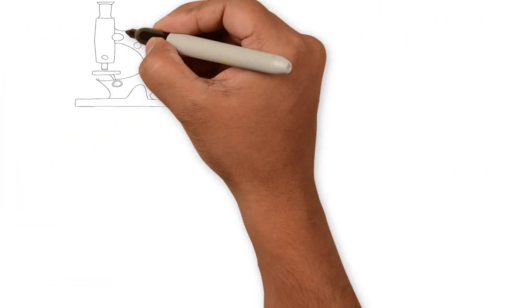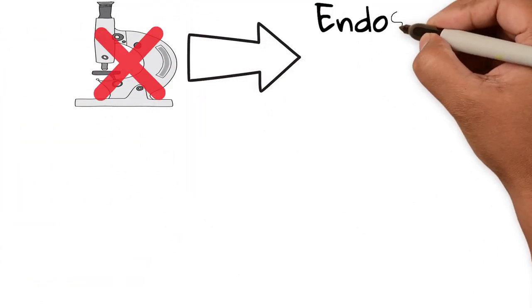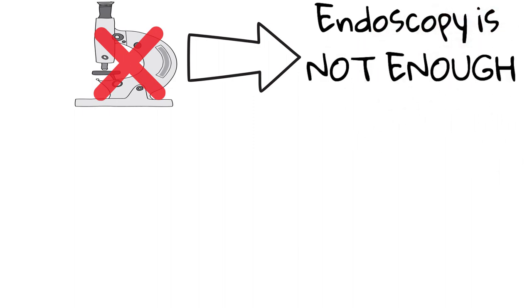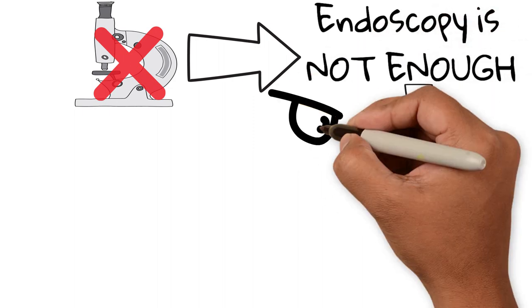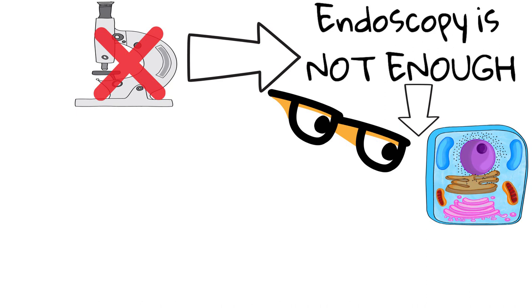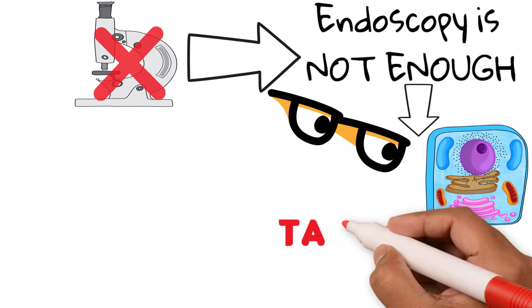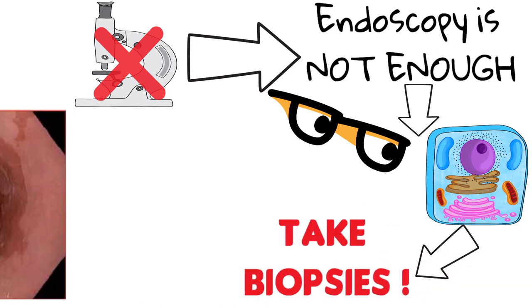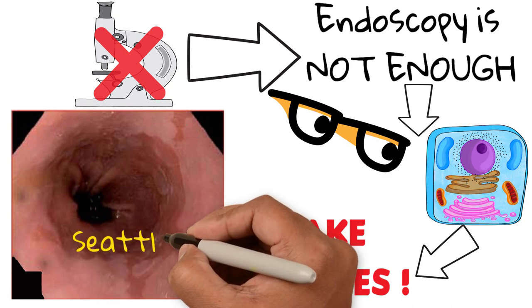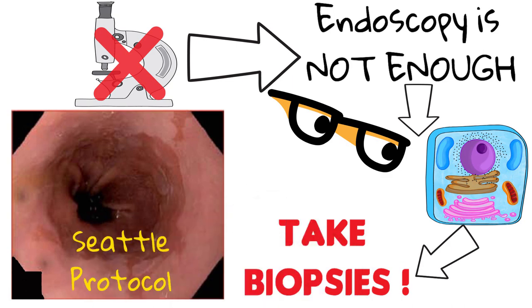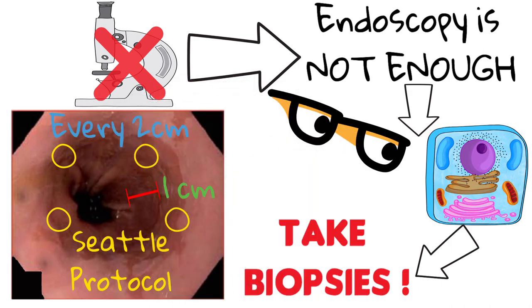An important thing to remember is that endoscopies don't have a microscopic vision, meaning that endoscopy alone is not enough to diagnose Barrett's esophagus — we need to look at the cells. Therefore, the final step in endoscopy is to take biopsies of the diseased esophagus following the Seattle Biopsy Protocol, which includes taking random biopsies from four different quadrants every 2 centimeters starting 1 centimeter above the gastroesophageal junction, as well as taking biopsies of any visible lesions.